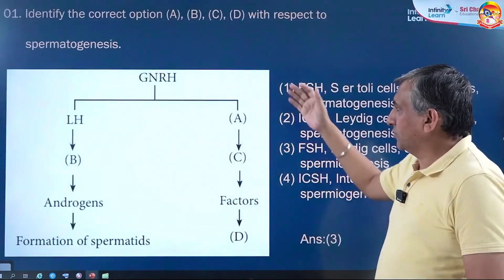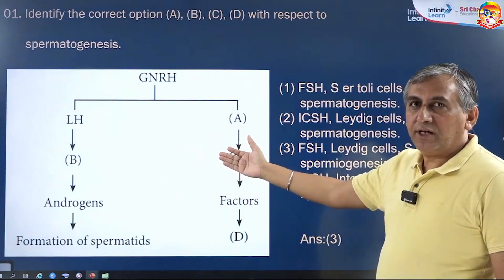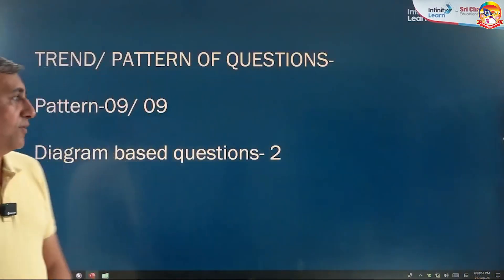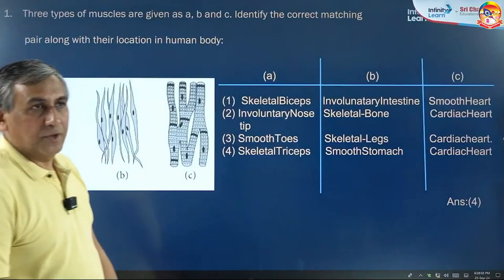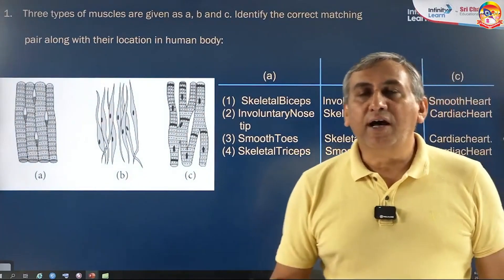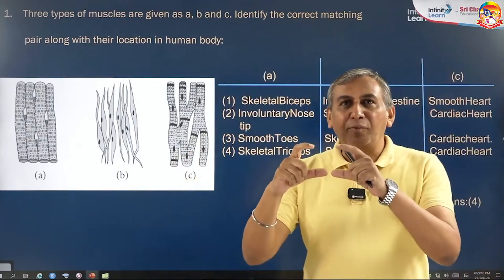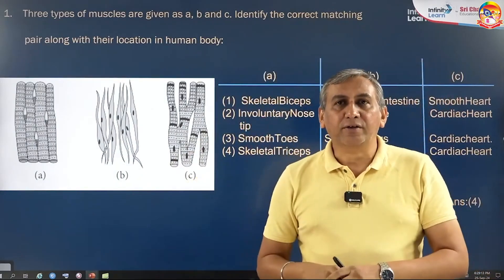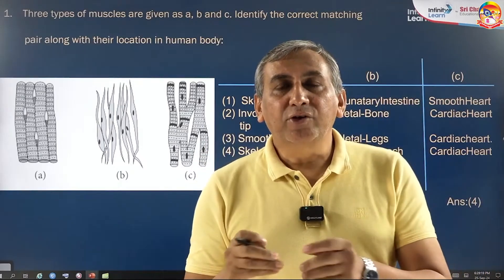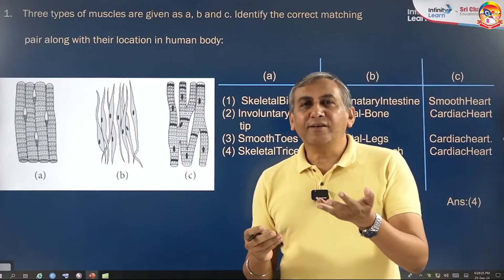The next pattern is the flow-chart question. They give you options A, B, C, D and you have to fill in the blanks — which is only possible when the sequence is known to you. The last variety is the diagram-based question. If you ask where to put more efforts, I will say try to solve the lengthier questions first — don't be afraid of length. In NEET exam, lengthier questions have very easy solutions and answers. The NEET pattern is closely following NCERT.